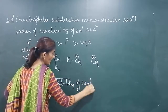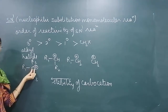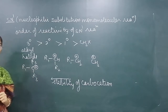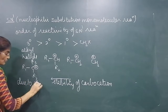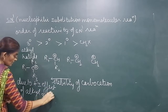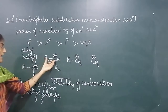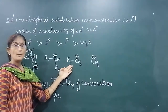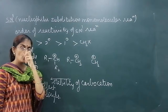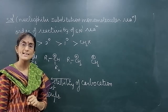Stability of carbocation increases in this order: tertiary > secondary > primary > methyl. Why is tertiary carbocation more stable than secondary? Tertiary carbocation has 3 alkyl groups. We know that alkyl groups are electron-releasing groups — they release electrons by inductive effect, the plus-I effect. Due to the plus-I effect of alkyl groups, delocalization of this positive charge is more, so tertiary carbocation is more stable. In secondary, there are only 2 alkyl groups; in primary, just 1; and in methyl, there is no alkyl group. So the order of reactivity of SN1 reaction depends on the stability of the carbocation.